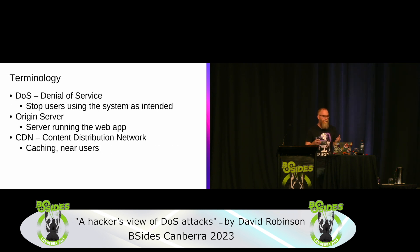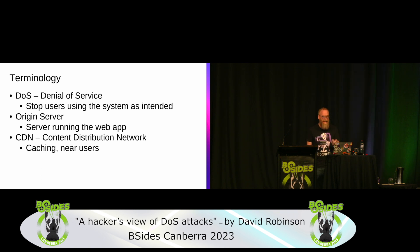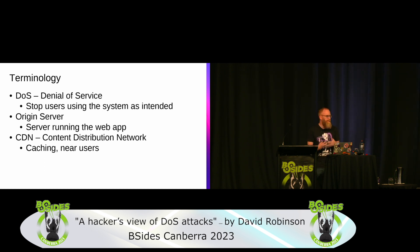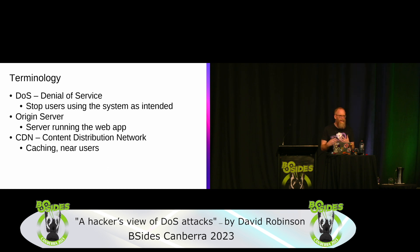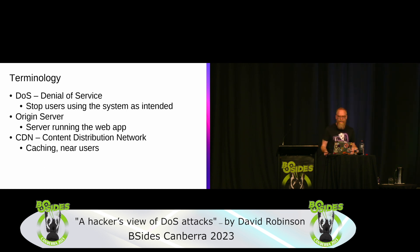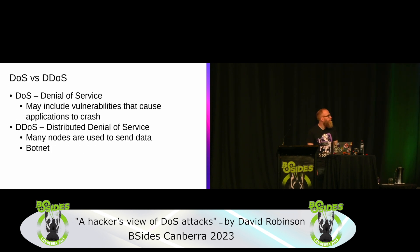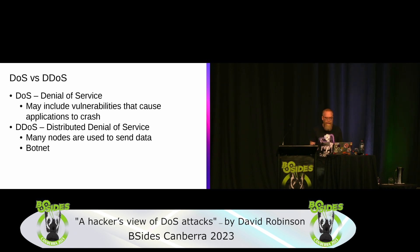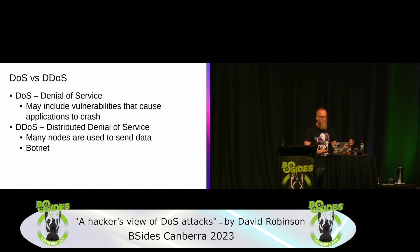Some terminology up front. A denial of service attack is a class of vulnerabilities where it stops users being able to use a system as intended. When I say origin server, I mean the actual application server running a web application, generally protected behind a content distribution network or CDN — something that caches data nearer the users and may have WAF and DoS protections, like Cloudflare, Crowdfront, or Akamai. DoS is the overall class of vulnerability; DDoS is a specific subset where many nodes — a botnet — are used to send the attack traffic, hence it being distributed.